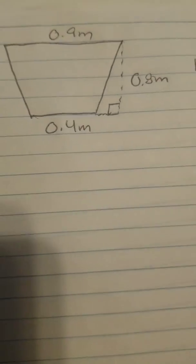Area of trapezoids. So what we're going to do is we're going to find the area of this trapezoid. You notice that this one has a lot of decimals, so we're going to end up multiplying and dividing decimals.